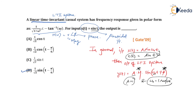Option D is the correct answer. I'm sure you have now understood how an LTI system reacts to a sinusoidal input, how to obtain magnitude and phase response from the frequency response, and how to identify a distortionless system by observing its magnitude and phase responses. These points are very important from an exam point of view. Thank you.